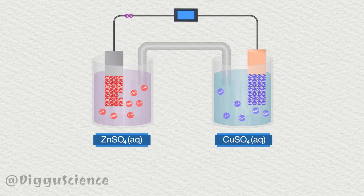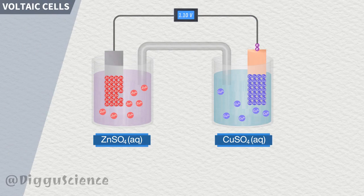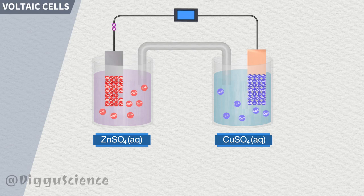This process takes place spontaneously. In electrochemistry, it is known as a voltaic cell. We will study voltaic cells further in the next series.